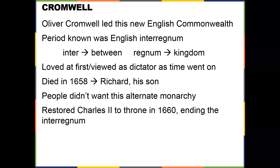Cromwell was well loved, but control grew on him. Nine years later he was still in power and had become something of a dictator. When he died in 1658 he planned to pass control to his son Richard, but the people didn't want that — they had just gotten rid of a hereditary monarchy with Charles I. They didn't want to abolish the monarchy; they just wanted a better monarch.